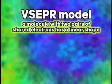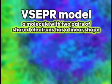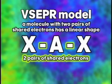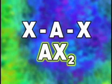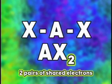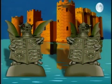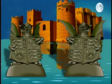The VSEPR model says that a molecule with two pairs of shared electrons has a linear shape. Using the VSEPR theory, if you know that a molecule has two pairs of shared electrons, you can predict that the molecule will have a linear shape. This linear shaped molecule is represented by the notation AX₂. The sub 2 tells you that there are two pairs of shared electrons. AX₂ — Linear!